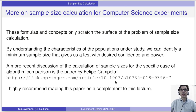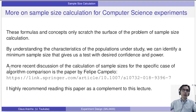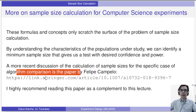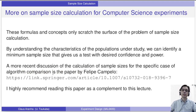These formulas only scratch the surface of sample size calculation. By understanding the characteristics of the experiment we want to do, we can identify the minimum sample size that gives us a test with the desired confidence and power. One paper I recommend reading discusses the calculation of sample sizes for the specific case of algorithm comparison — a situation many of you will encounter in your master's degree. I highly recommend reading this paper as a complement to this lecture.